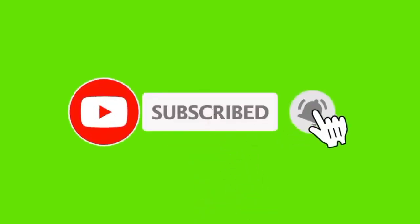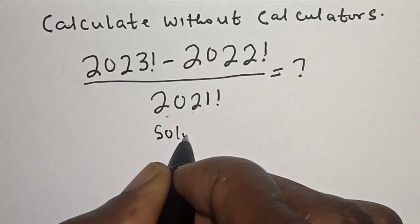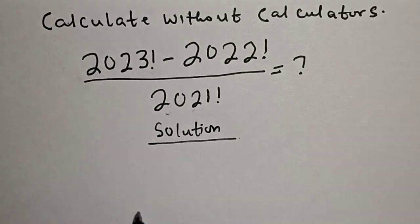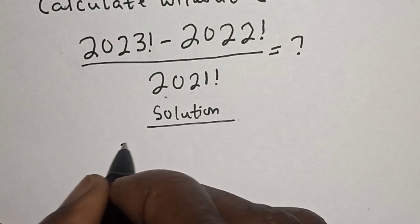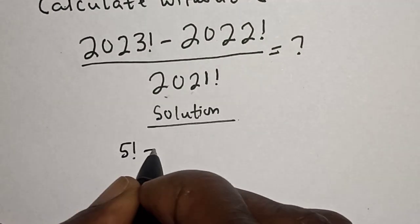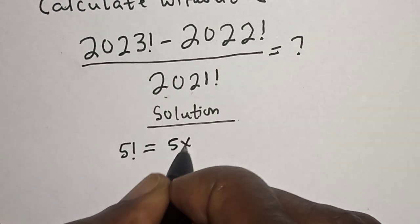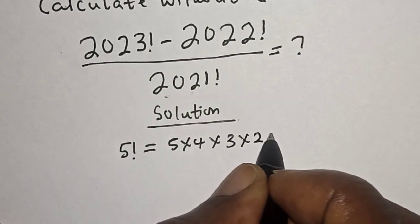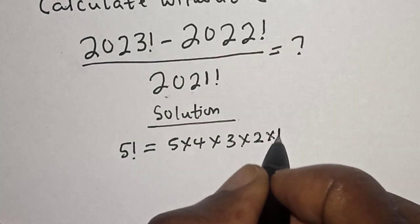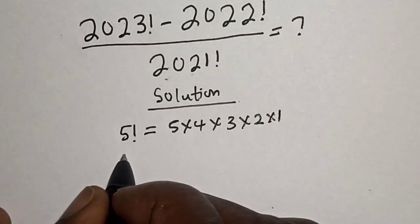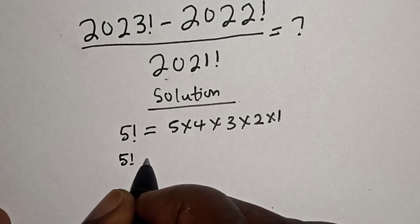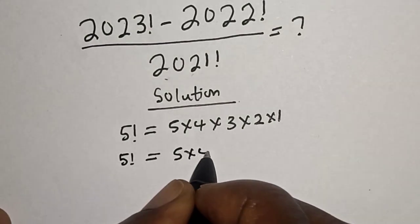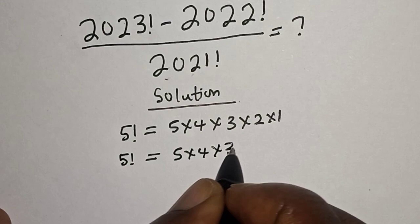Solution. Take note that if you have 5 factorial, this is equal to 5 multiplied by 4 multiplied by 3 multiplied by 2 multiplied by 1. Also, 5 factorial can also be written as 5 multiplied by 4 multiplied by 3 factorial.